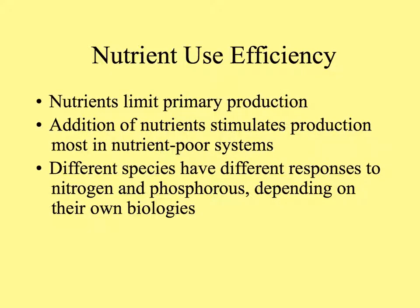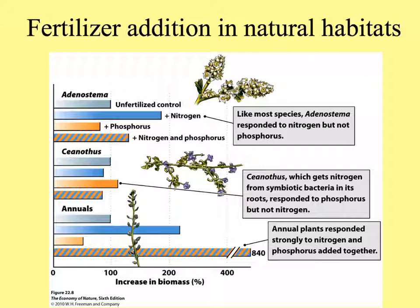In nutrient-poor systems we can sometimes see the stimulating effects of adding extra nutrients, because in these cases nutrients limit primary production. Different species have different responses to added nitrogen and phosphorus depending on their biologies and physiologies. In a study with California plants, adenostoma responded typically by growing more vigorously with added nitrogen. But ceanothus, which has symbiotic nitrogen-fixing bacteria, didn't respond to additional nitrogen but showed greater growth with additional phosphorus. Annual plants in general responded most to both nutrients in combination.